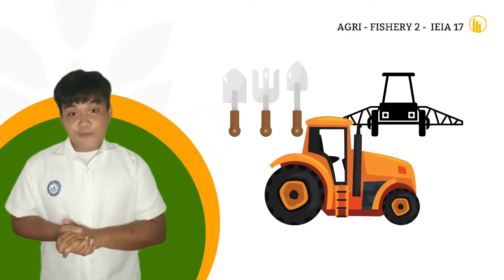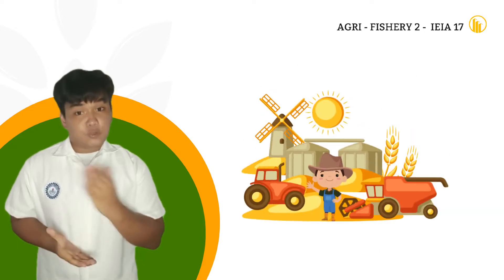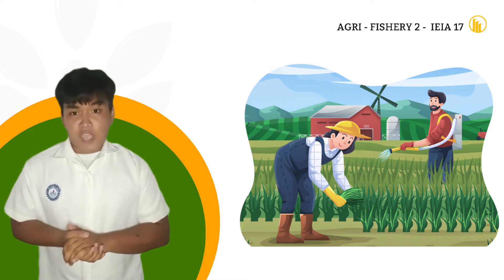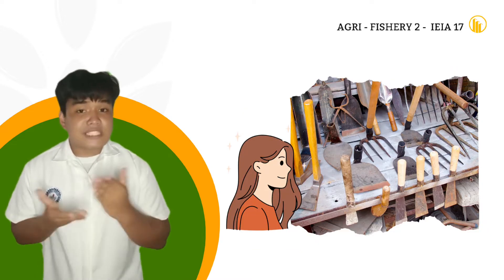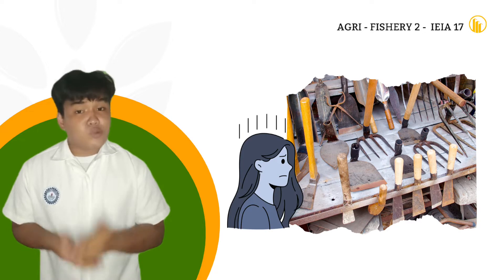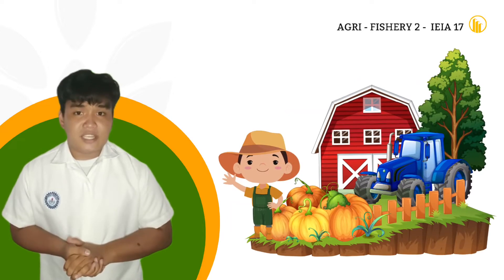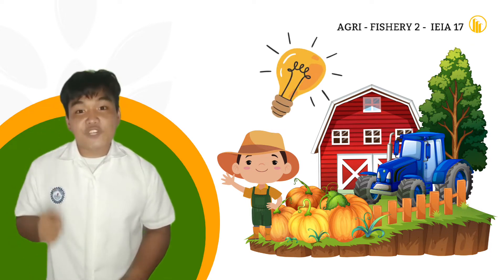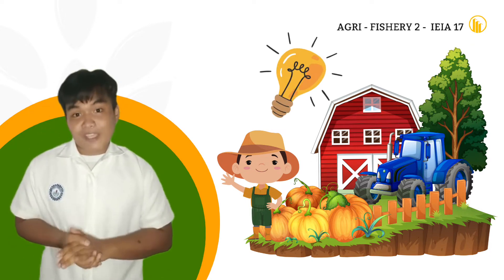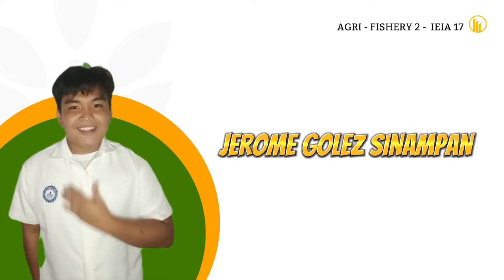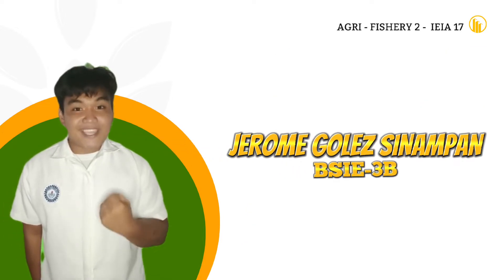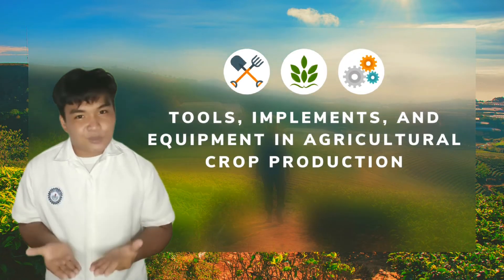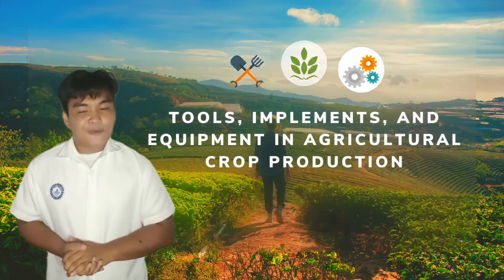Farm tools, implements, and equipment play a very important role in agricultural crop production. Their availability makes the work much easier and faster. However, if we have the most sophisticated tools and implements but do not know how to use them, they are useless. In order to do agricultural crop production successfully, we must have a good working knowledge of the tools, implements, and equipment before using them. My name is Jerome Golison, a student from BSI 3B, and for today's informative video presentation, I'm going to discuss the classification of tools, implements, and equipment in agricultural crop production.